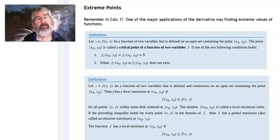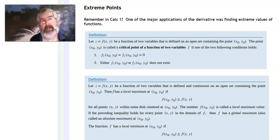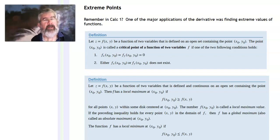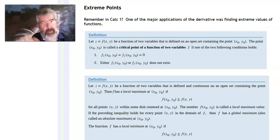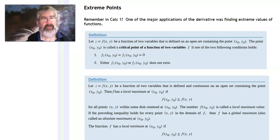In this video, I want to talk about finding extreme points when you've got a function of two variables. Remember back in Calc 1, one of the classic applications of the derivative is optimization — finding extreme points, finding maxes and mins. The idea is you've got a graph and you're looking for where the high points or low points are. You want to get the most out of something, or you want to spend the least amount of money. Somehow you're wanting to optimize — you want to do the best you can.